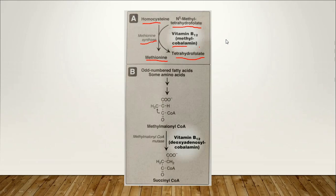There is a test in the blood where we can see methylmalonic acid. Methylmalonic acid is detected in the blood — this is a test for vitamin B12 deficiency. We can study the methylmalonic acid level, and in case of vitamin B12 deficiency, methylmalonic acid is decreased.